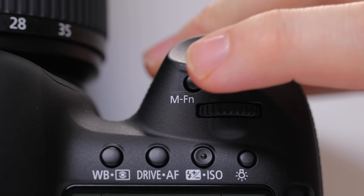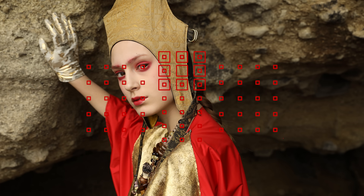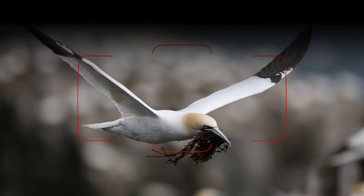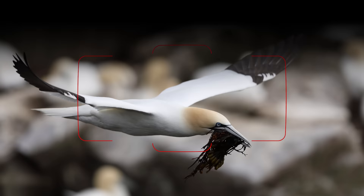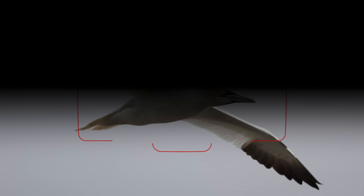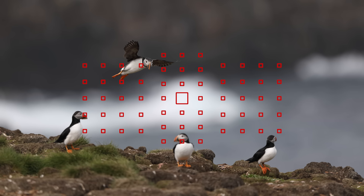Changing the size of an AF point can be helpful in many situations. You can focus on one small, precise area of a subject or scene, or alternatively, use a larger AF area to focus upon more of a subject. Larger AF areas often make it easier to follow moving subjects, particularly fast-moving ones, or subjects without lots of detail or texture. And you can switch from or into automatic AF point selection, where all 61 points are active and available.